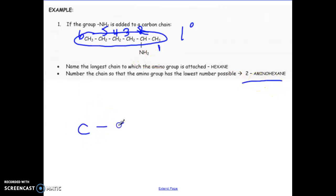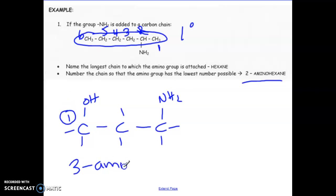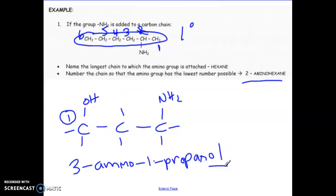When you have competing functional groups — say an OH on one end and an NH2 on the other — the alcohol takes priority over the amino group. So the carbon bearing the OH is carbon one, and if the NH2 is on carbon three of a propane chain, this would be named '3-amino-1-propanol.' We'll look at more examples in the next part.